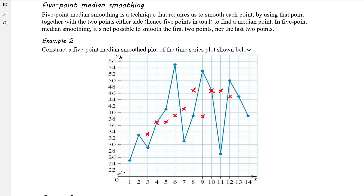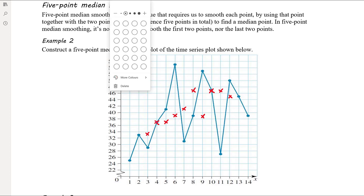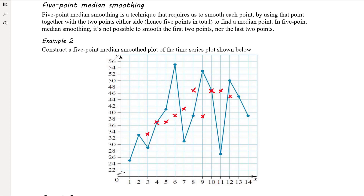Now we have our plot and we join it up with a straight line using a ruler — you always have a ruler available since you can use the edge of the lid of your CAS calculator. So the five-point median smoothing is again revealing an upward trend in this data.